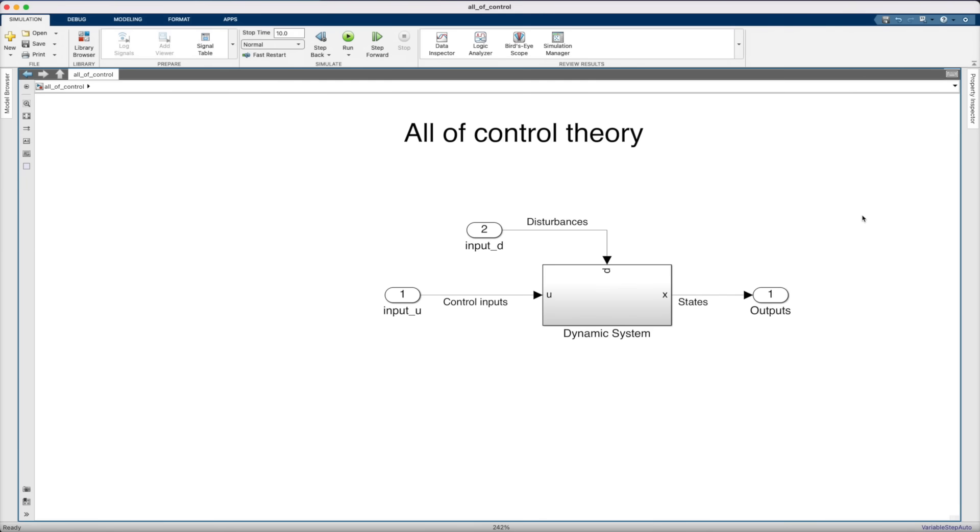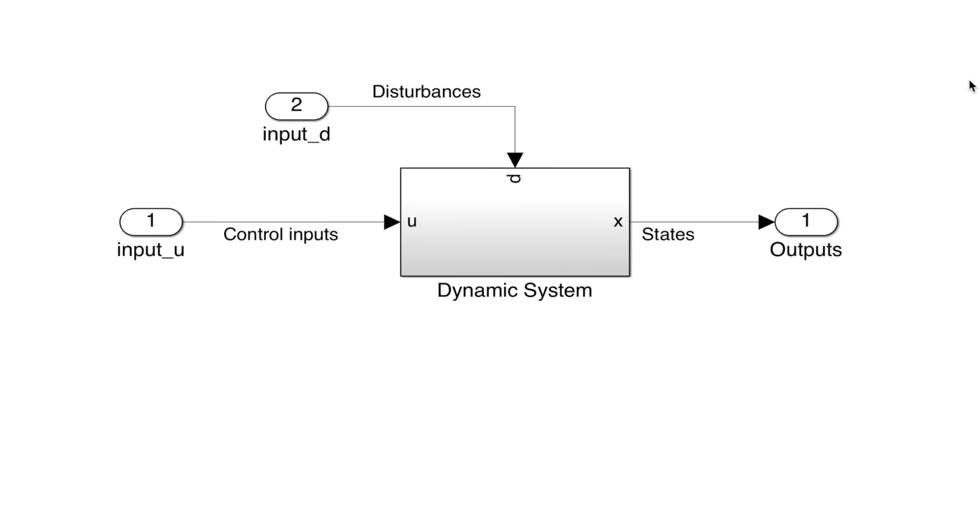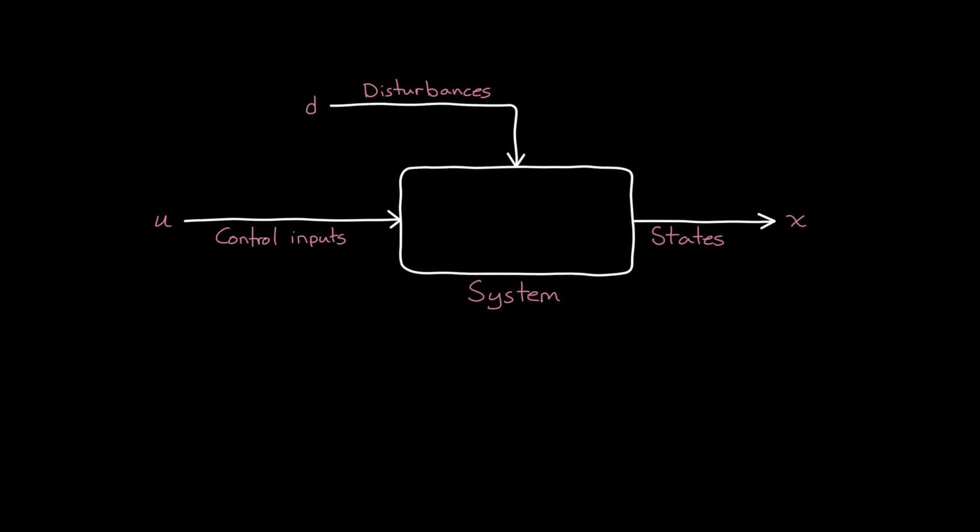We can understand all of control theory using a simple diagram. And to begin, let's just start with a single dynamical system. This system is the thing that we want to automatically control, like a building or a distillation column or a car. It can really be anything. But the important thing is that the system can be affected by external inputs. And in general, we can think of the inputs as coming from two different sources.